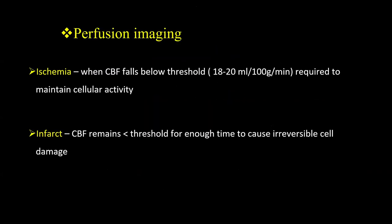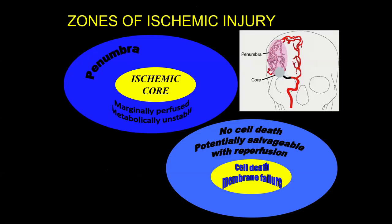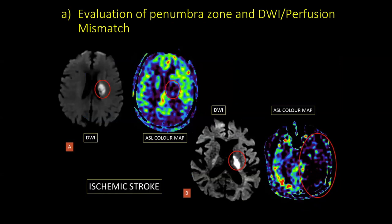In stroke, the most important concept is perfusion-diffusion mismatch — meaning there is an area beyond the infarcted brain parenchyma called the ischemic penumbra, which can actually be saved by timely interventions. The entire aim of stroke imaging and stroke treatment is to save this salvageable penumbra. We have been using the concept of perfusion-diffusion mismatch to delineate it, and ASL provides this useful information even without using contrast.